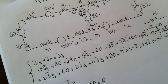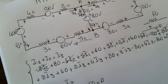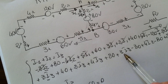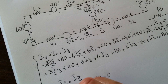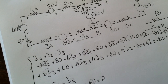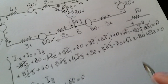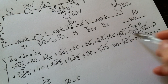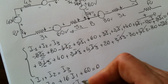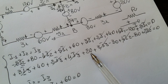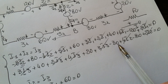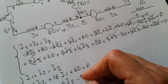Now we have the third equation. We sum the I3 terms: plus 3, plus 2, plus 4, plus 3, plus 4, giving plus 12·I3. Then the I2 terms: plus 4 and plus 2, so plus 6·I2. Then the generators: 40, 20, minus 30, and minus 80, which gives minus 50, equals zero.